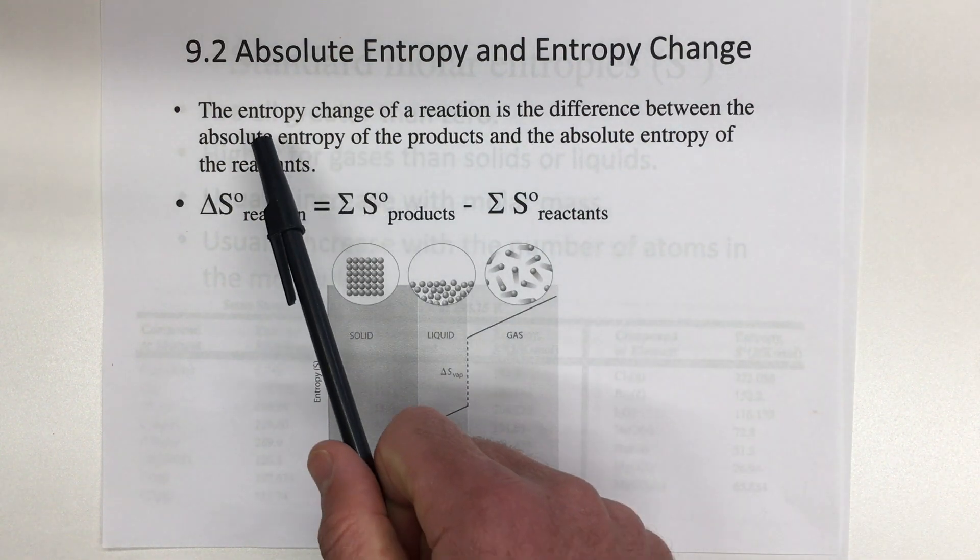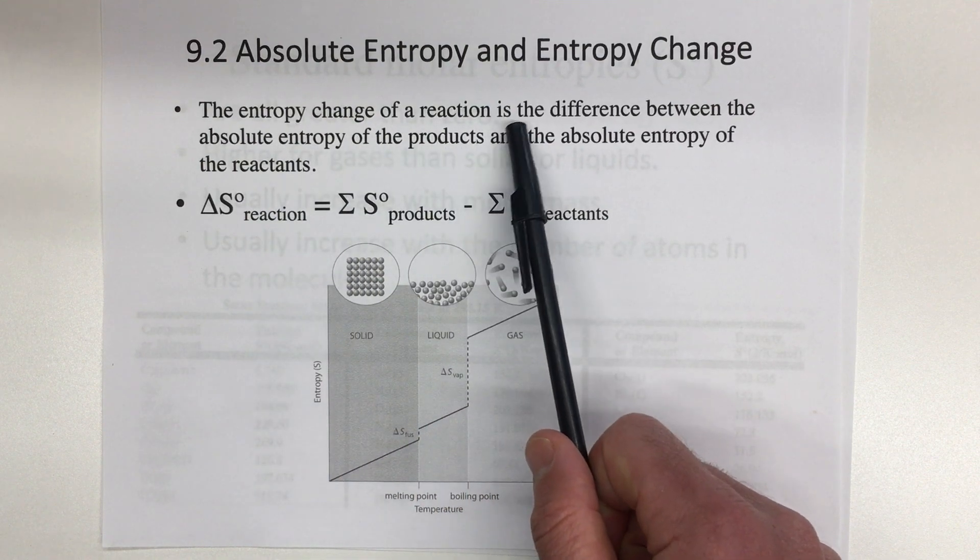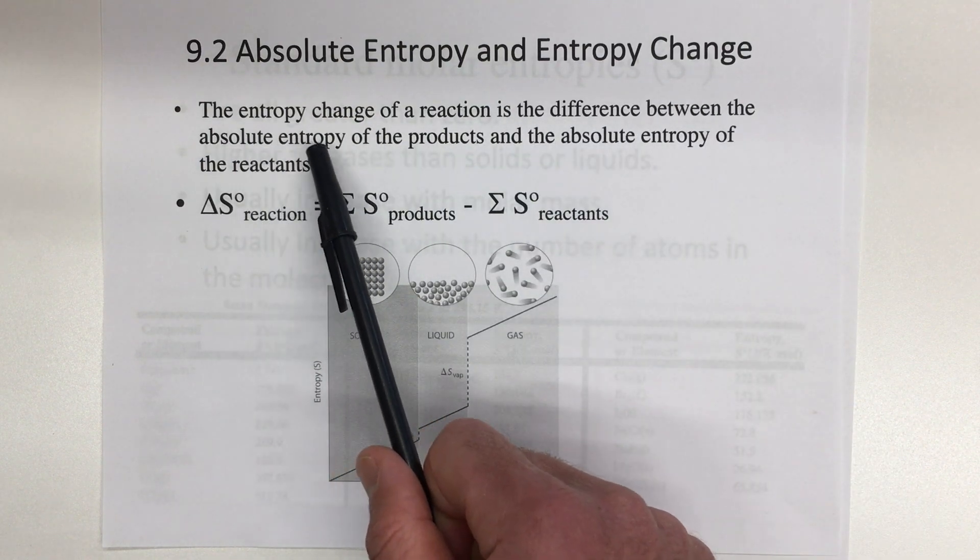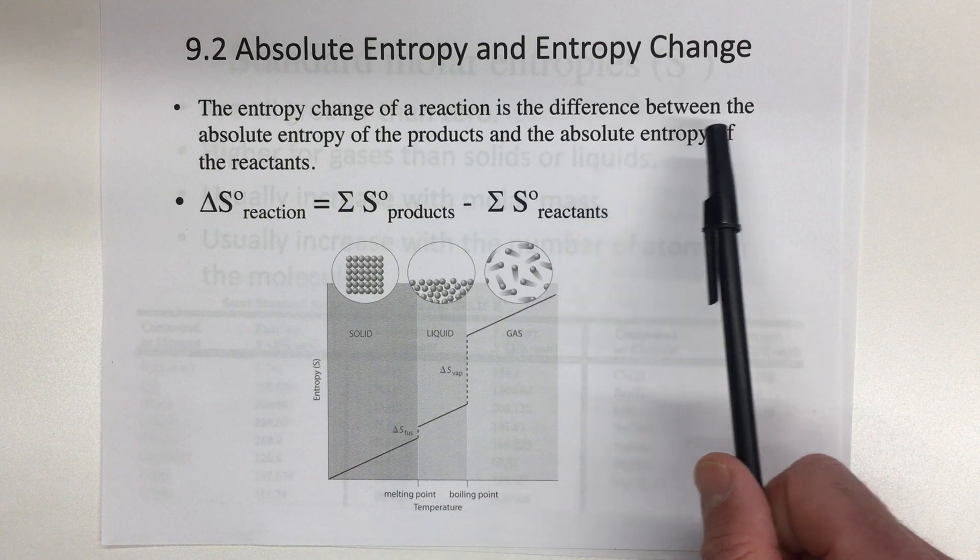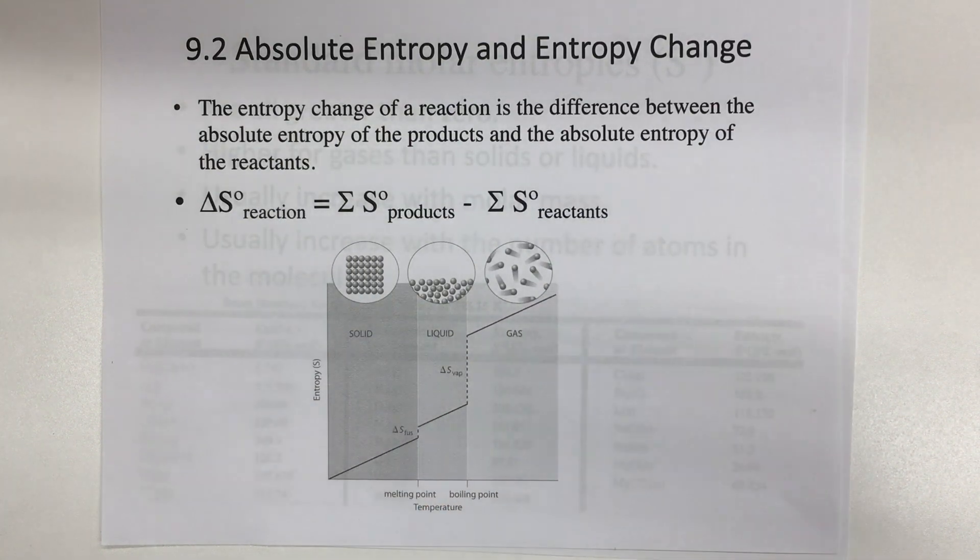So in order to do that, we know that the entropy change of a reaction is the difference between the absolute entropy of the products and the absolute entropy of the reactants. We did something similar with enthalpy. Entropy, just like enthalpy, is a state function, meaning it doesn't matter what path you take. You just need to know the difference between where you started with your reactants and where the products end up, and that change from the reactants to the products gives us the change.